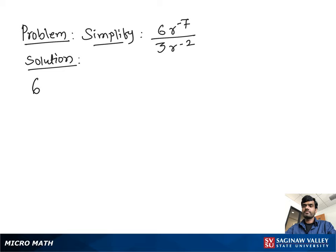Simplify 6r to the negative 7 divided by 3r to the negative 2. First, we divide 6 by 3, which is 2. Then, using the exponents property, we write r to the negative 7 minus negative 2, which becomes positive 2.